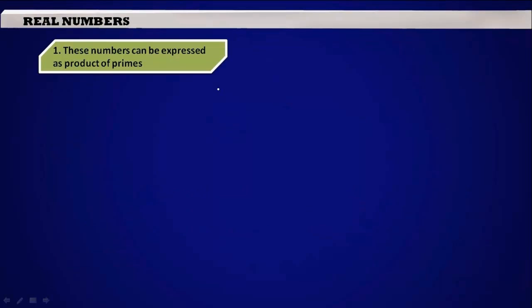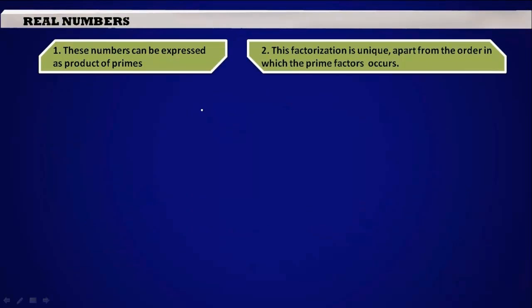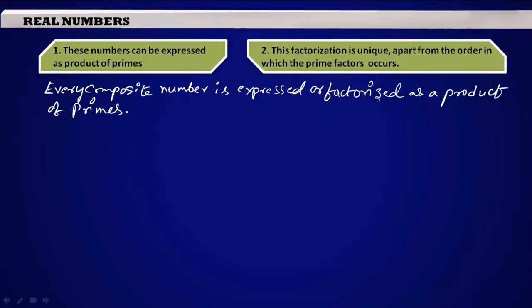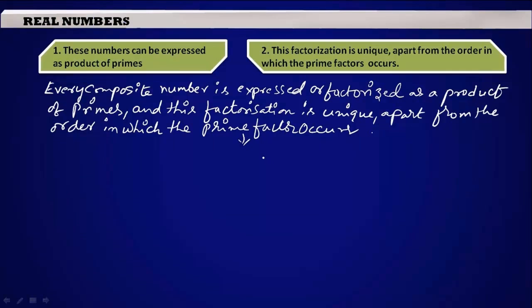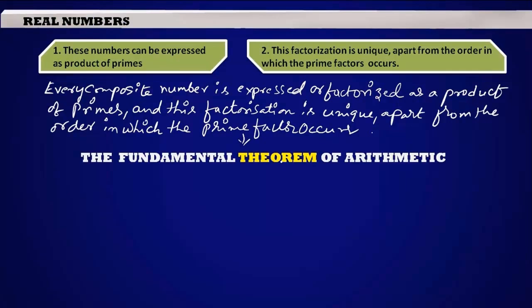Now let us sum up the two interesting facts that we learned about composite numbers into a theorem. Every composite number is expressed or factorized as a product of primes, and this factorization is unique apart from the order in which the prime factors occur. This theorem is called the fundamental theorem of arithmetic.